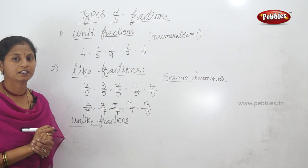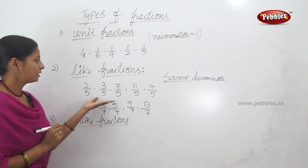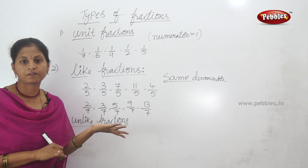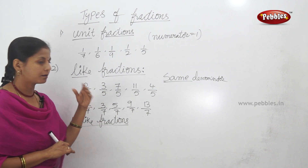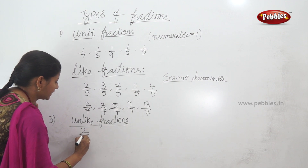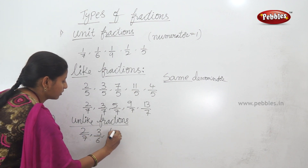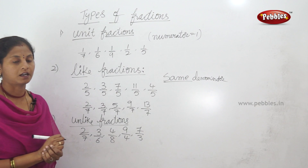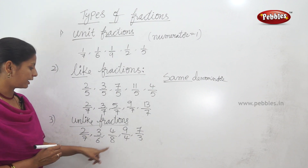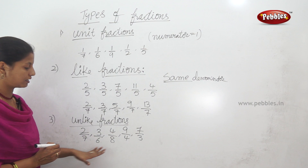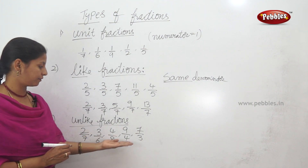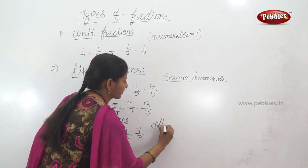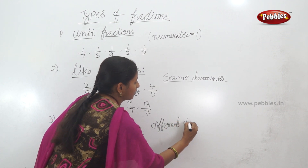Unlike fractions have different denominators. Like fractions have the same denominators. For unlike fractions, the denominator must be different. Examples: 2 by 7, 3 by 6, 4 by 8, 9 by 4, 7 by 3 — here both numerator and denominator are all different.